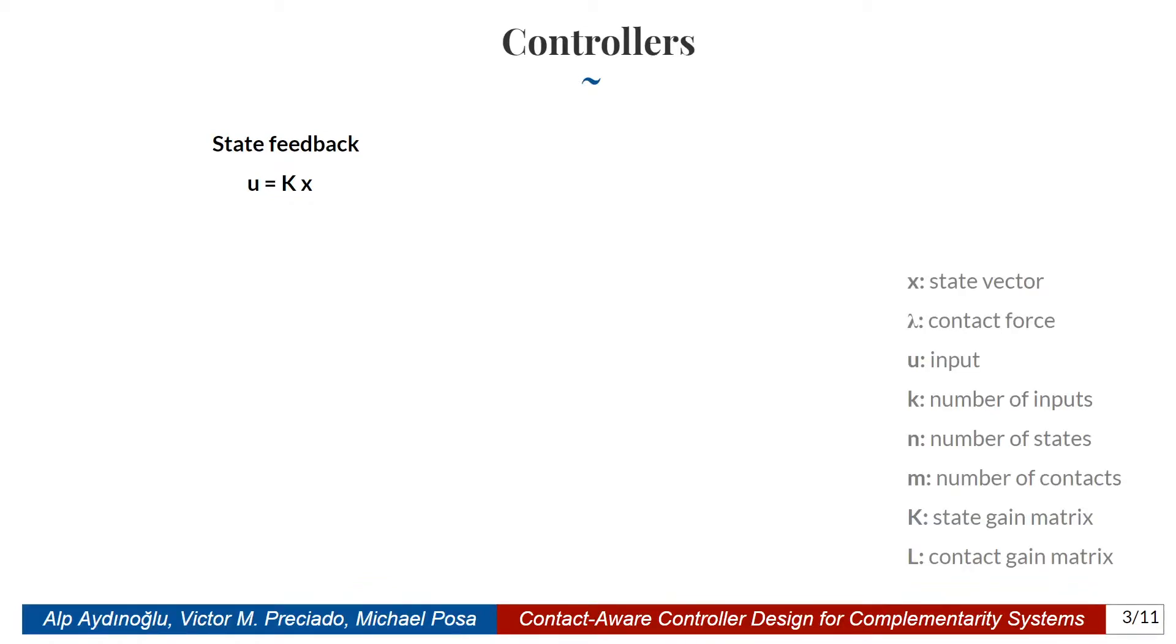Previously, people have used two different types of controllers for multi-contact systems. In our work, we focus on linear and piecewise linear controllers. The first controller is the state feedback controller. Here observe that K is a linear map that maps the state vector into the input U. The second one is the hybrid controller, and it has a similar structure with the state feedback controller, with the difference that the linear mapping can change depending on which mode is active. We propose a controller which is a function of both X and lambda, where lambda is the contact force. Observe that L is a contact gain matrix, and depending on the value of L, the effect of the contact force on the input can change.